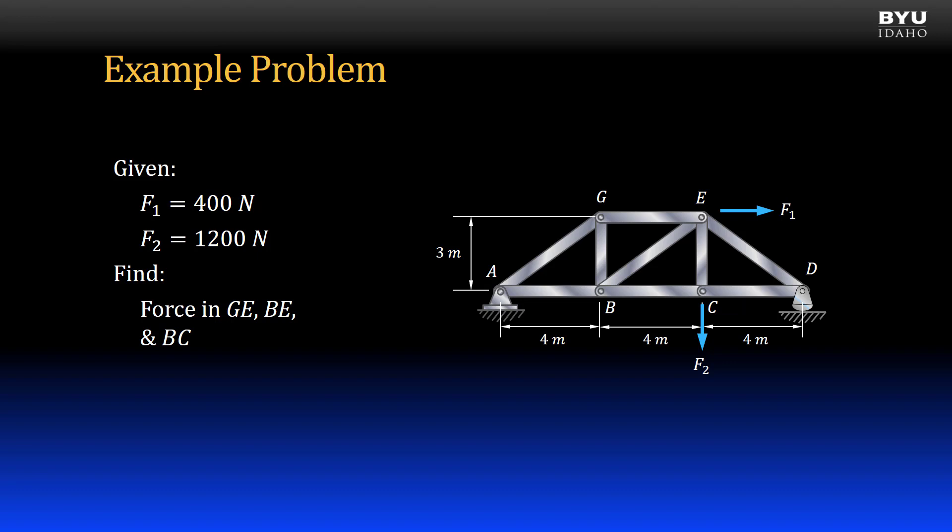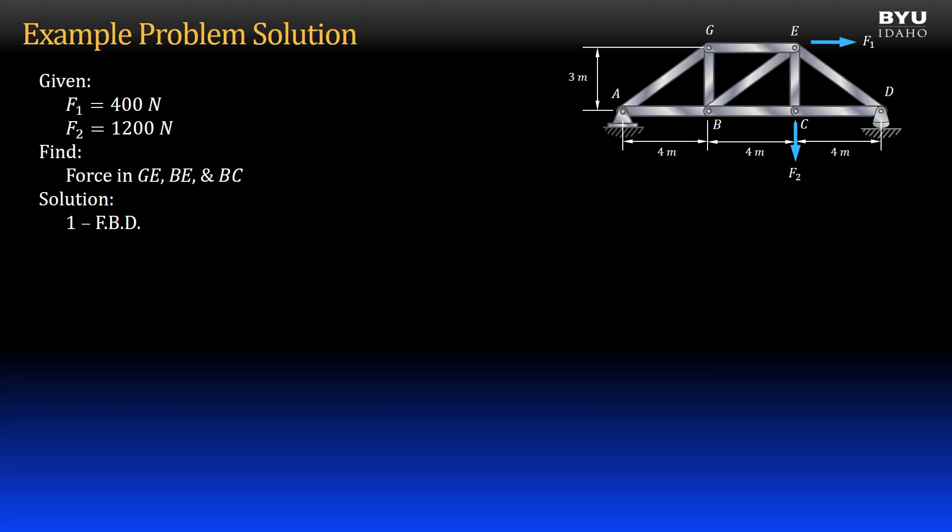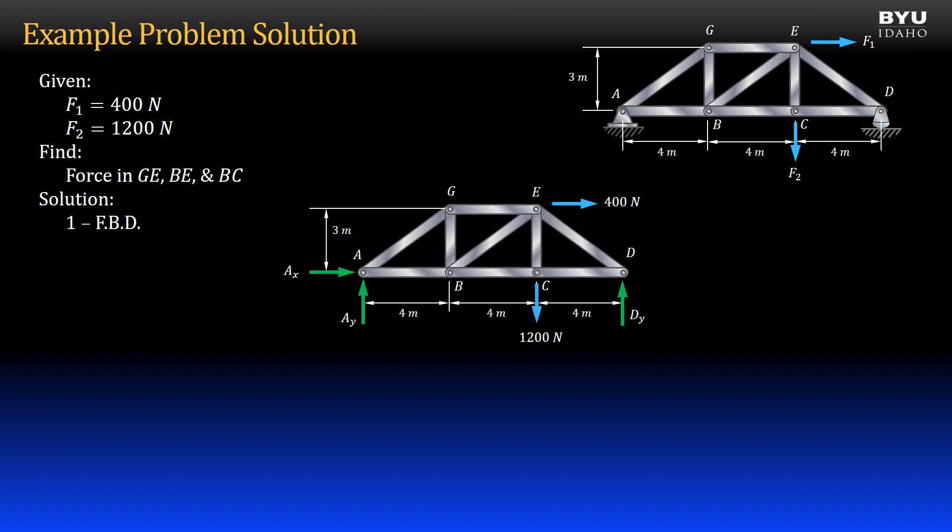Because we only need three member forces, we will use the method of sections. It will be much less work than the method of joints. Our first step is to draw a free body diagram of the full truss. Here it is.